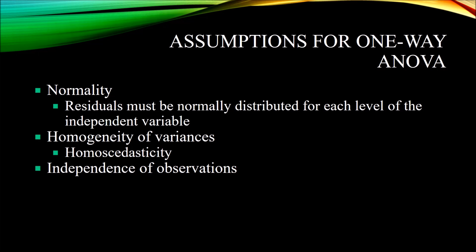If your data fail to meet the assumption of homogeneity of variances, you may consider a few different test options — one would be the Welch test and another would be the Brown-Forsythe test. The third assumption for one-way ANOVA is independence of observations: these need to be unrelated groups, and one observation cannot be dependent on another. This is more of a research design issue — you meet this assumption through having a research design that is consistent with that assumption.